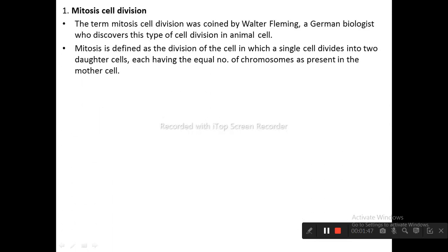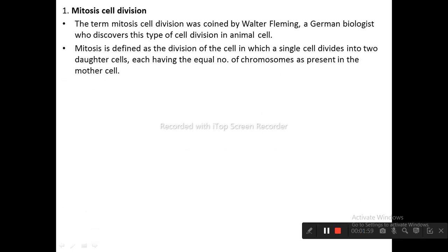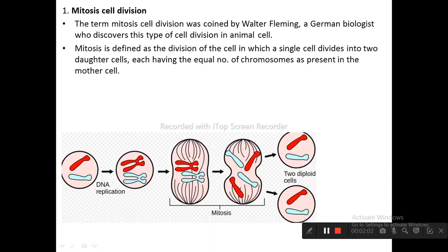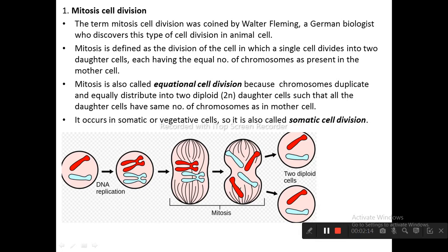The term mitosis cell division was coined by Walter Fleming, a German biologist who discovered this type of cell division in animal cells. Mitosis is defined as the division of the cell in which a single cell divides into two daughter cells, each having the equal number of chromosomes as present in the mother cell. Mitosis is also called equational cell division because chromosomes duplicate and equally distribute into two diploid daughter cells.